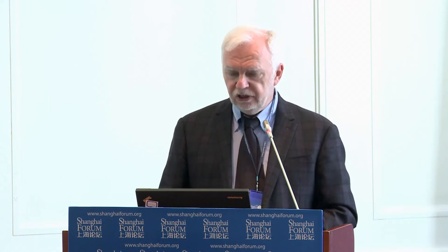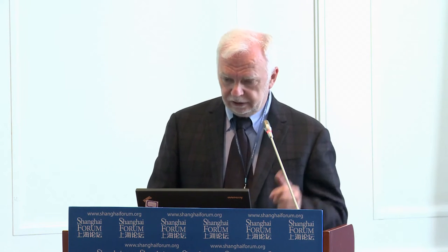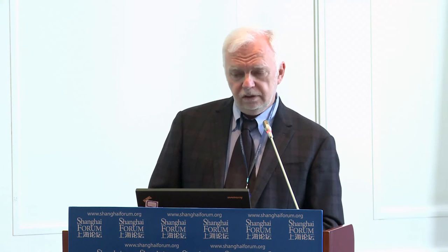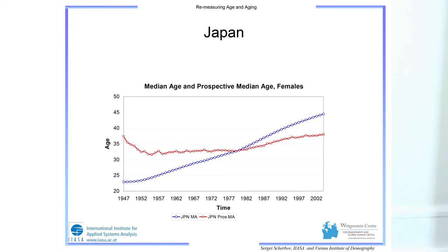Now let's look at how aging appears when we use prospective measures. We can calculate a prospective median age. For Switzerland, the traditional median age goes up — the population is clearly aging under the traditional definition. But the prospective median age goes in the opposite direction, meaning the population is actually becoming younger. England and Wales shows the same story. For Japan, today's population is no older in prospective terms than it was in 1947.